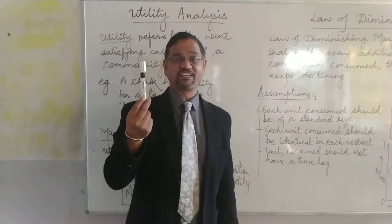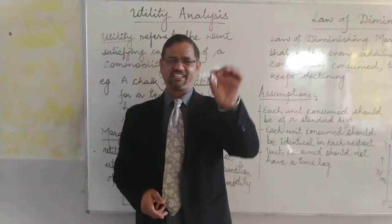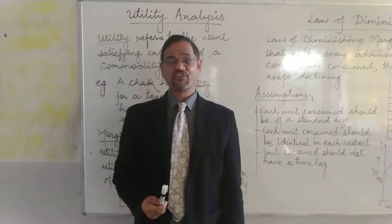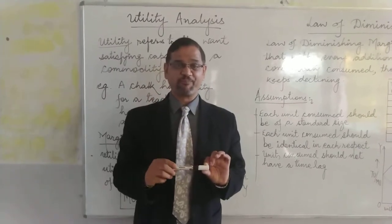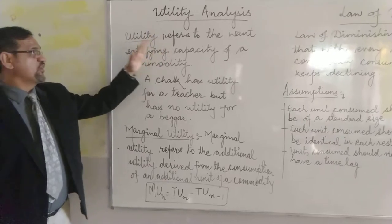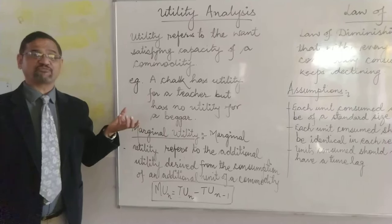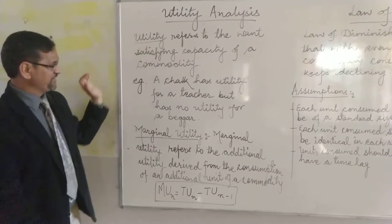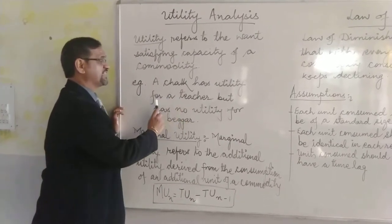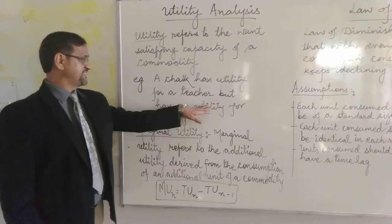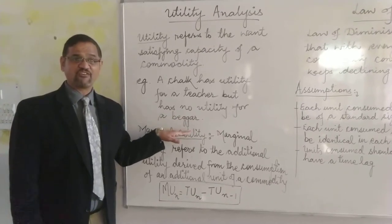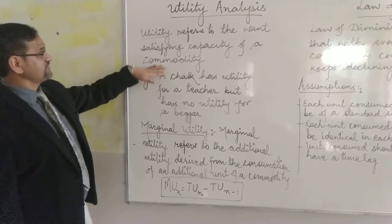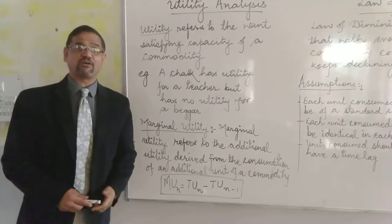If I'm writing with this marker, it satisfies my want, so it has utility for me. But if a beggar is asking for money and I give him this marker, for him it is of no use — it doesn't satisfy his wants, so its utility will be zero. Utility refers to the want-satisfying capacity of a commodity. For example, chalk has utility for a teacher using a blackboard, but for a beggar it has no utility at all. Utility depends on how much want is satisfied by a commodity for a person.